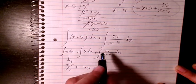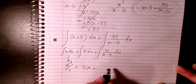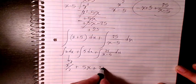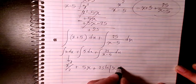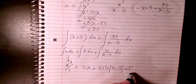And integration of this one will be 25 log x minus 5 plus a constant number.